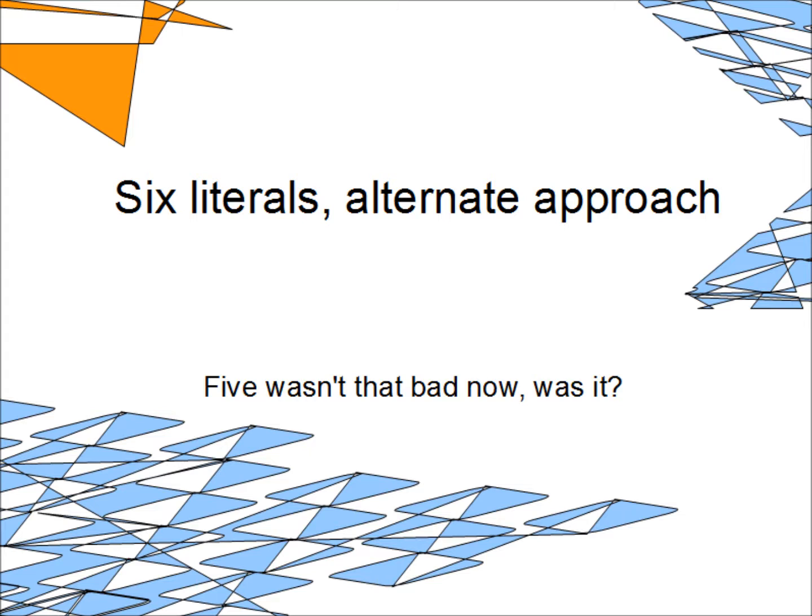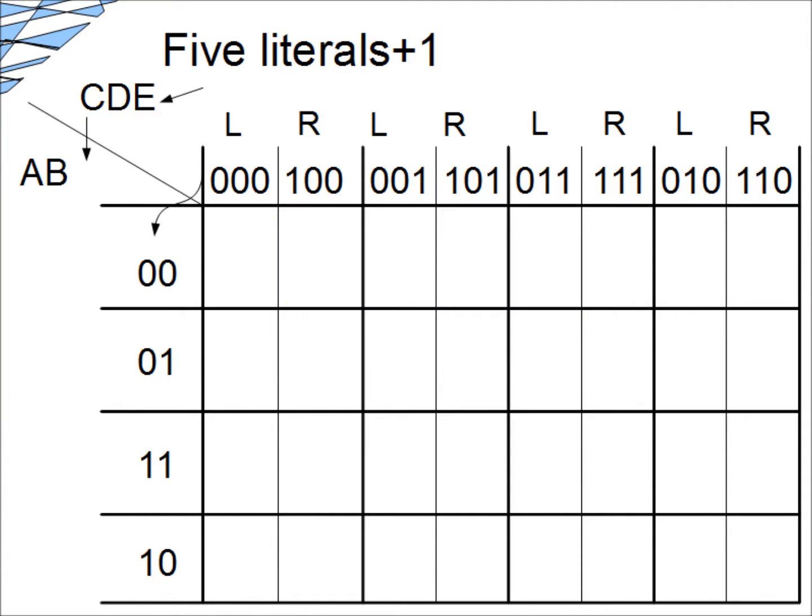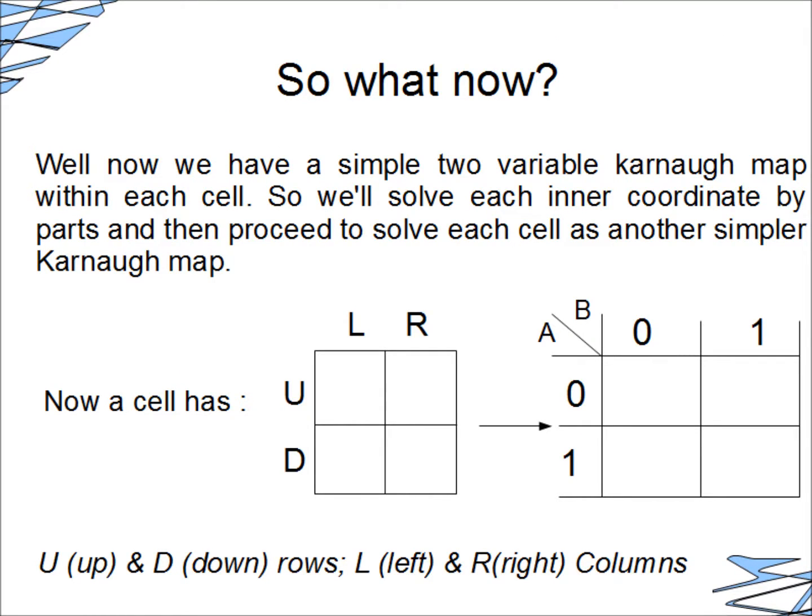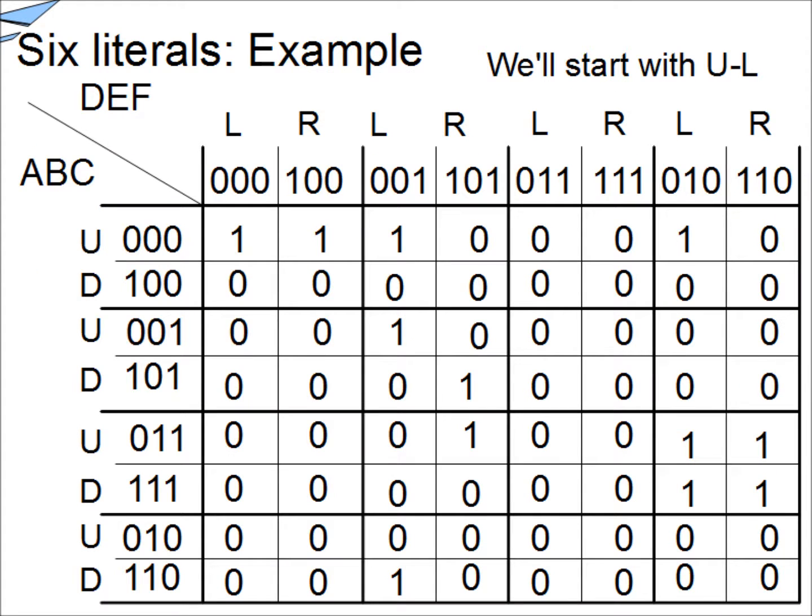So, what happens when we want to introduce six literals? Well, we're just going to take the C, put it in the rows, and add a little F to our column denominators. And yes, we're going to copy the exact same number sequence down to our rows. Now, we just added a new dimension. So, what does that mean? Well, that just means that within each cell of our Karnaugh map, we now have a two-input Karnaugh map. So, how do we solve a two-input Karnaugh map? We saw that in video one. But, let's see an example.